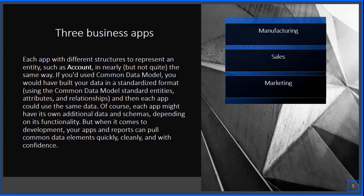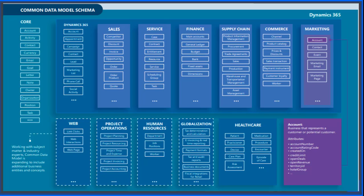So it helps you develop applications much faster. This is a high-level representation by Microsoft of the Common Data Model. There are core tables like account, activity, contracts, currency, and email. Currently most tables come from Microsoft Dynamics 365, which covers sales, service, finance, supply chain, commerce, talent, and marketing. All these tables are adopted into CDM and documented well.